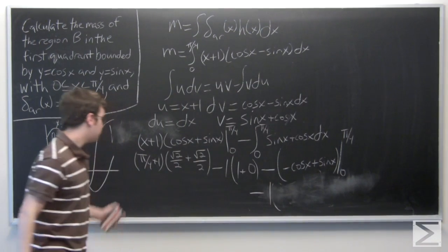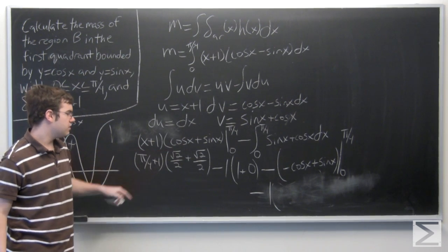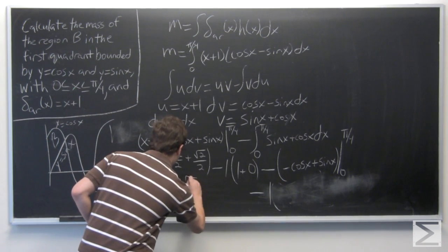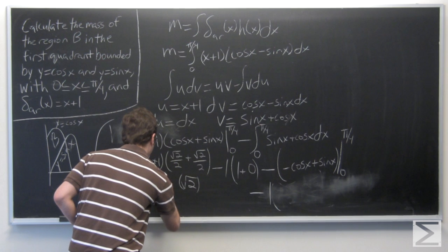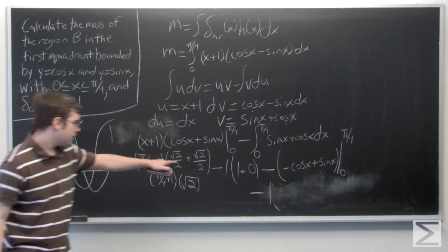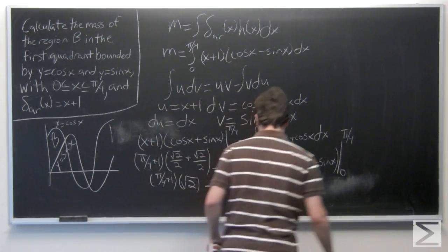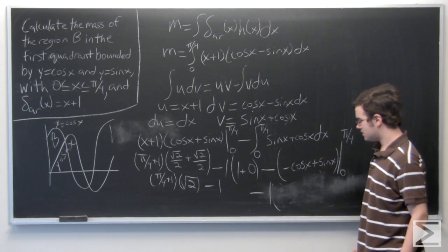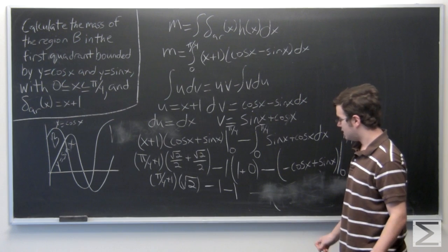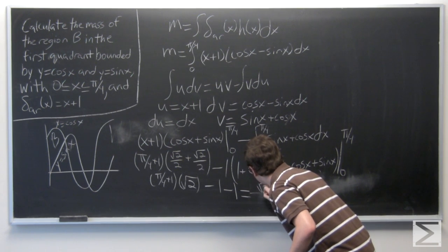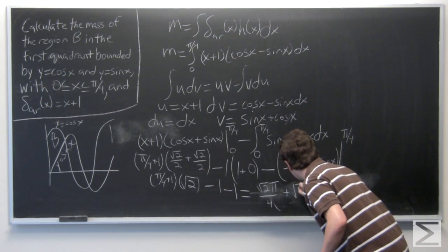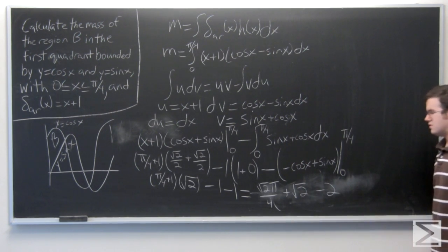Going back: square root of 2 over 2 plus square root of 2 over 2 is just square root of 2, times the factor. Then we have minus 1, and minus 1 from this expression. Doing the arithmetic, we end up with the final answer: square root of 2 times pi over 4 plus square root of 2, all minus 2. And that is our final answer.